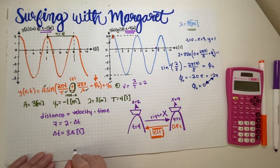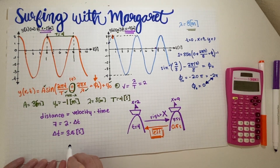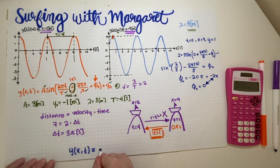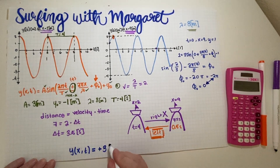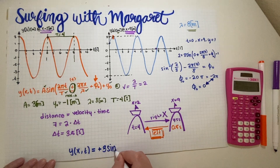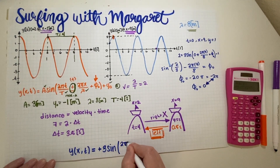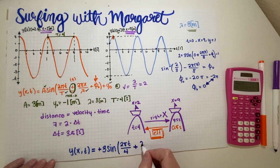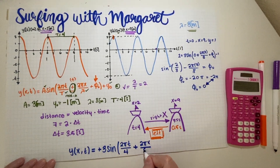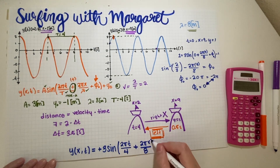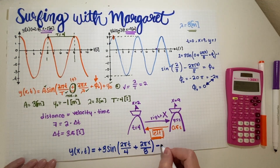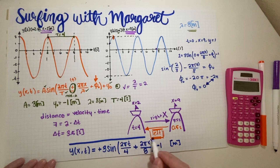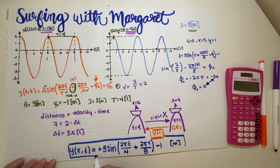So the final answer for this Physics 7C quiz is: y(x,t) = 3 sin(2πt/4 + 2πx/8) − 1, in meters. The phase constant is 0, so we don't need to write that term.